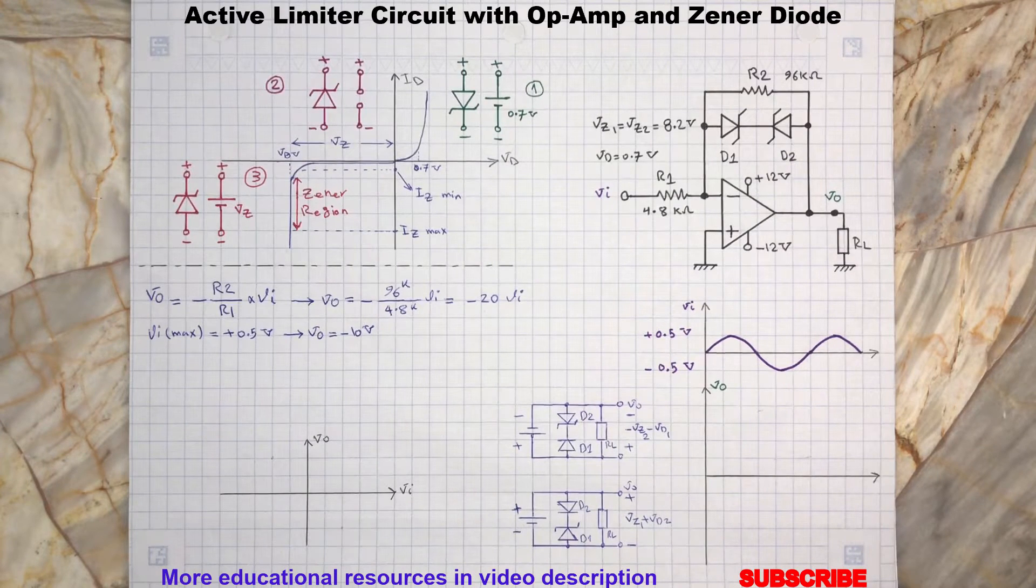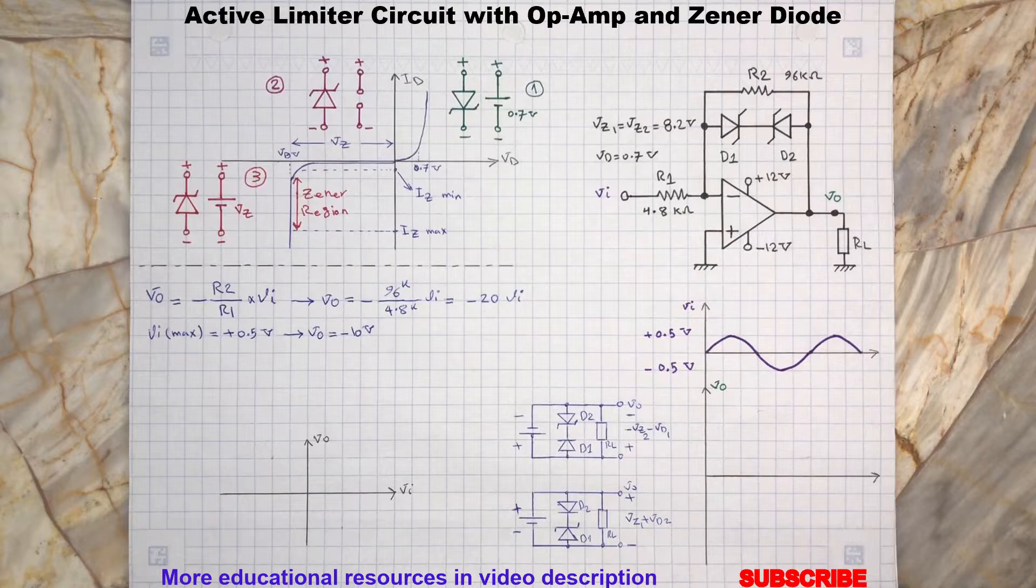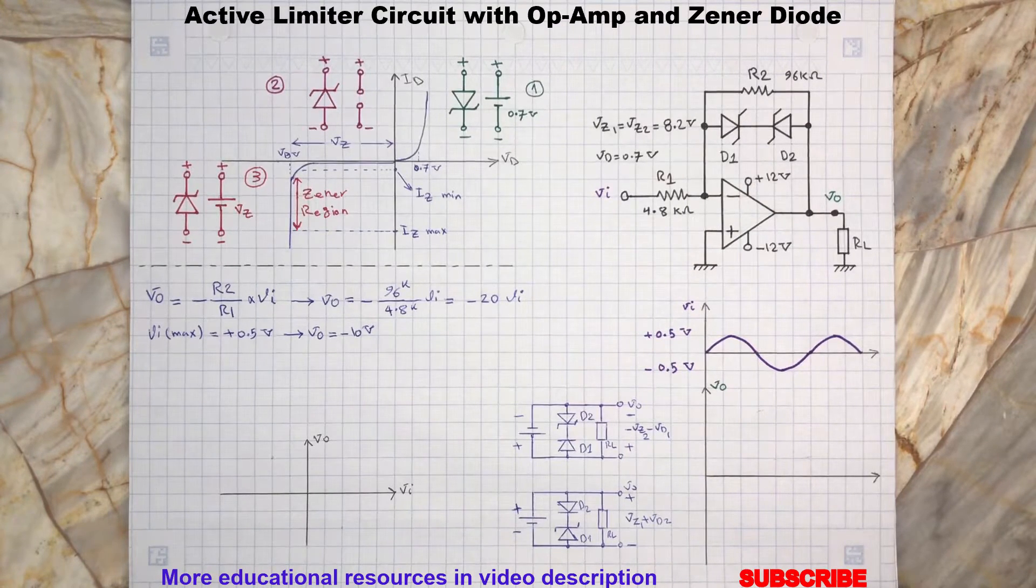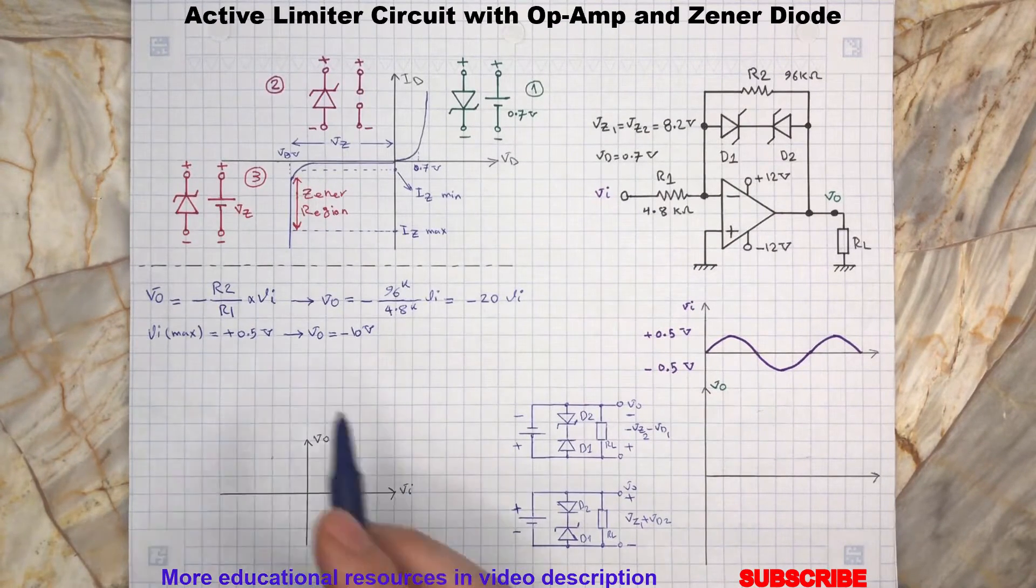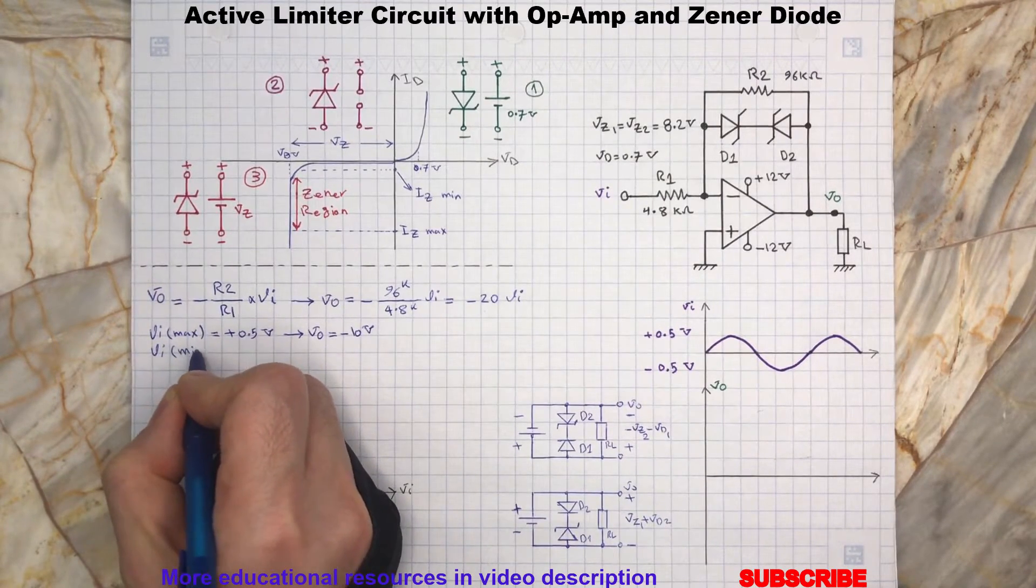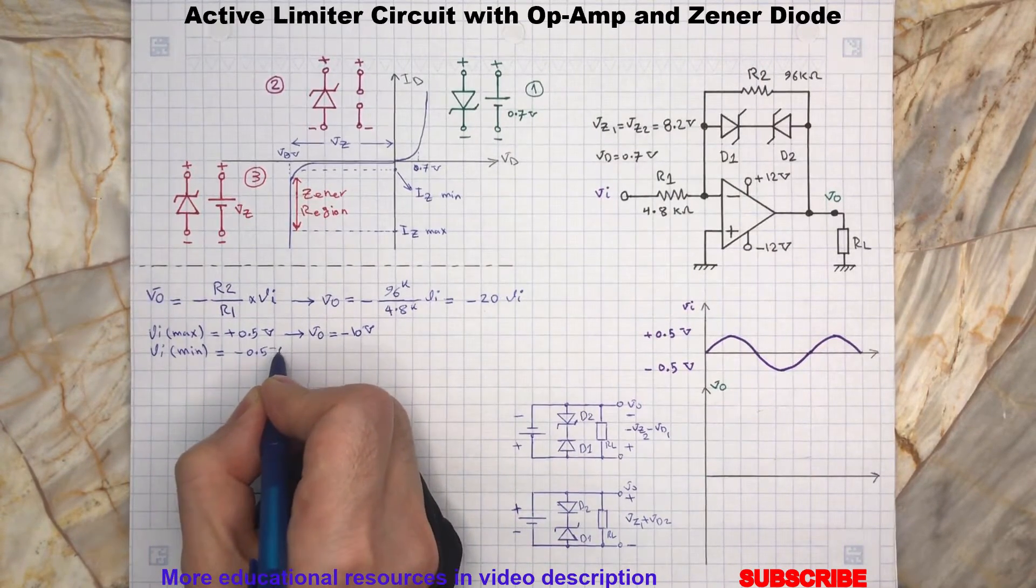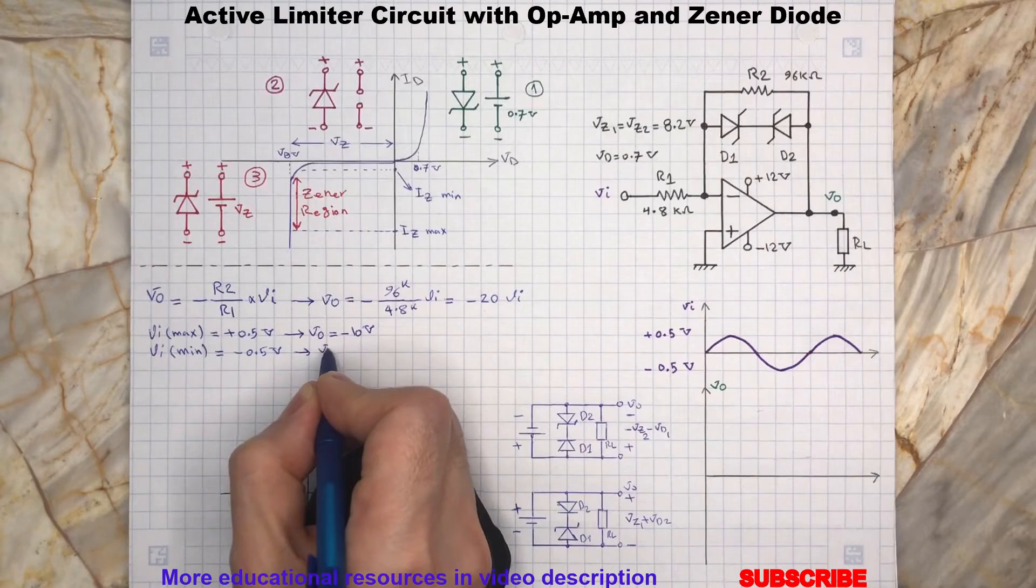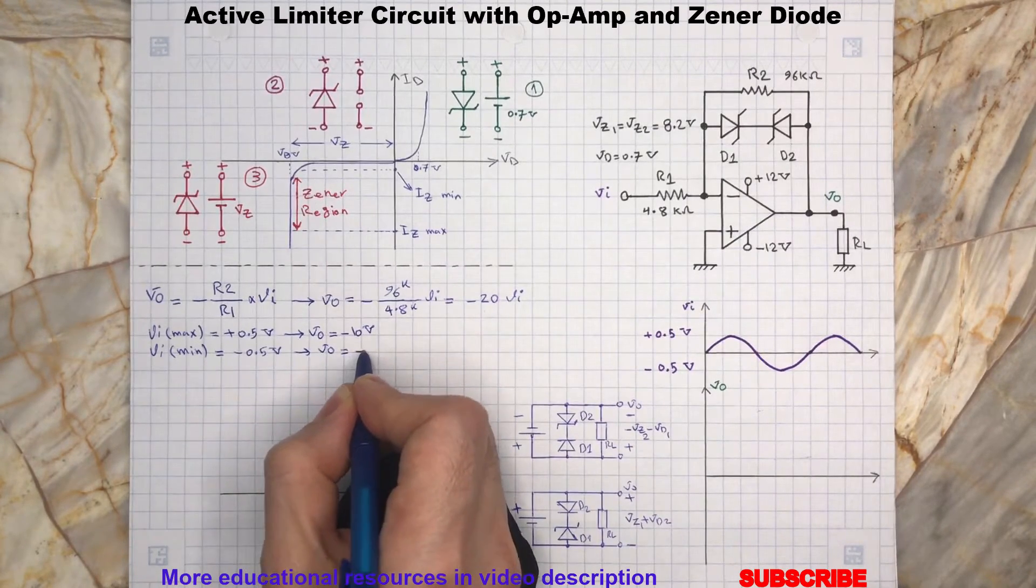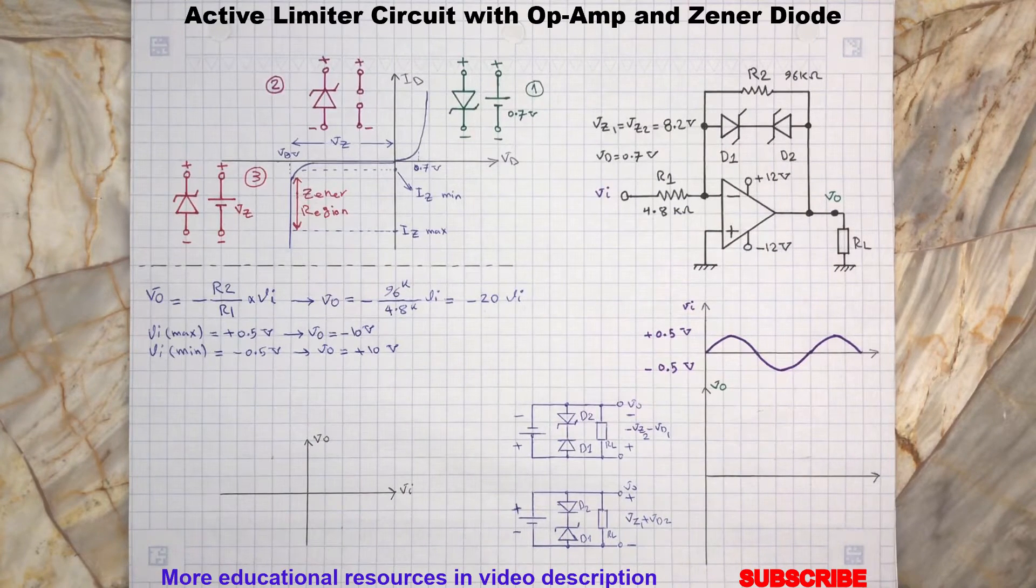And also when Vr is at its minimum possible, which is negative 0.5 volts, then Vo will be at its maximum. Let's draw the output signal here.